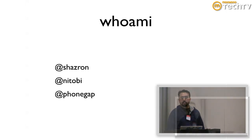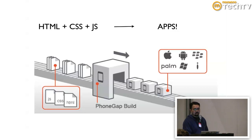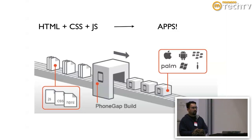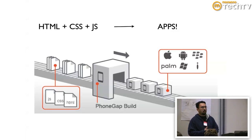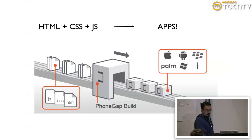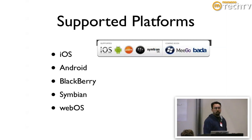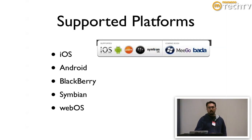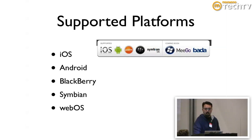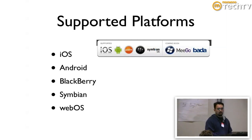Usually I do iOS. So basically what we have is you just give us your HTML, CSS, and JavaScript, and out comes apps. We currently support five platforms - all the popular platforms like iOS, Android, Blackberry, Symbian, and WebOS. And coming soon are Windows Phone 7, Amigo, and Samsung beta.